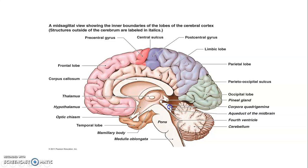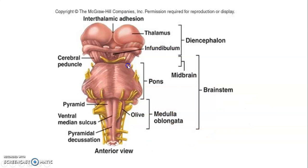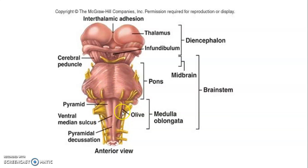The posterior part of the midbrain — the tectum — contains the corpora quadrigemina, which has the superior colliculi and inferior colliculi. That picture shows the parts of the brainstem: the midbrain, pons, and medulla with their different parts, including the cerebral peduncle of the midbrain and the pyramids of the medulla.